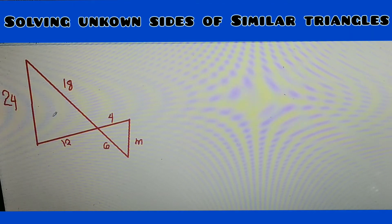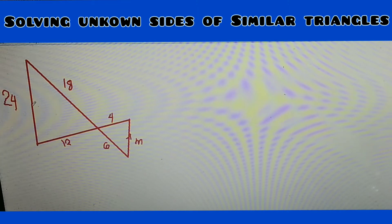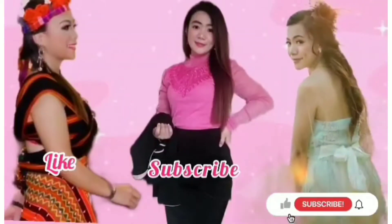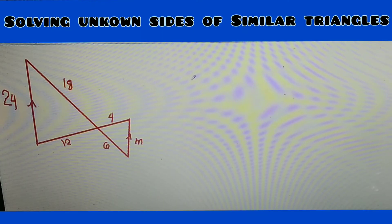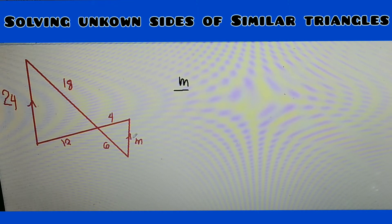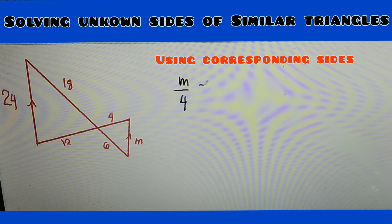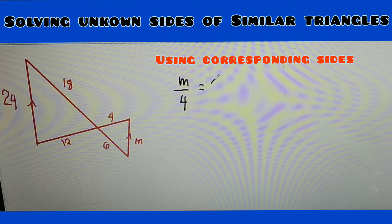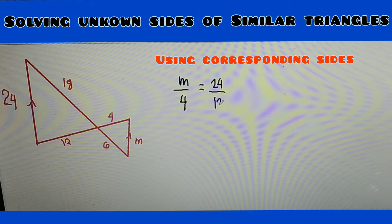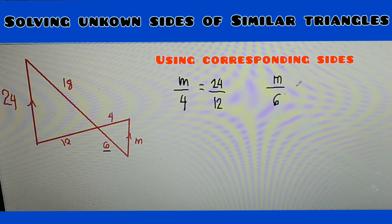We'll find the unknown side of the triangle, which is m. This line here is parallel. How are you going to solve for m? Because m is the unknown side of the small triangle. Let's try: 4 is equal to — which side is similar with m? This is 24, so 24 over 12. Or you can find another solution: m over 6, if you want the other side.